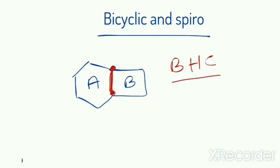The joining of these 2 ring systems is known as a Bridge, and these 2 carbon atoms that join these 2 systems together are known as Bridge Headed Carbon atoms. Now for nomenclature, we should start numbering first. For numbering in a Bicyclic compound, we start numbering with any one of the Bridge Headed Carbon atoms.